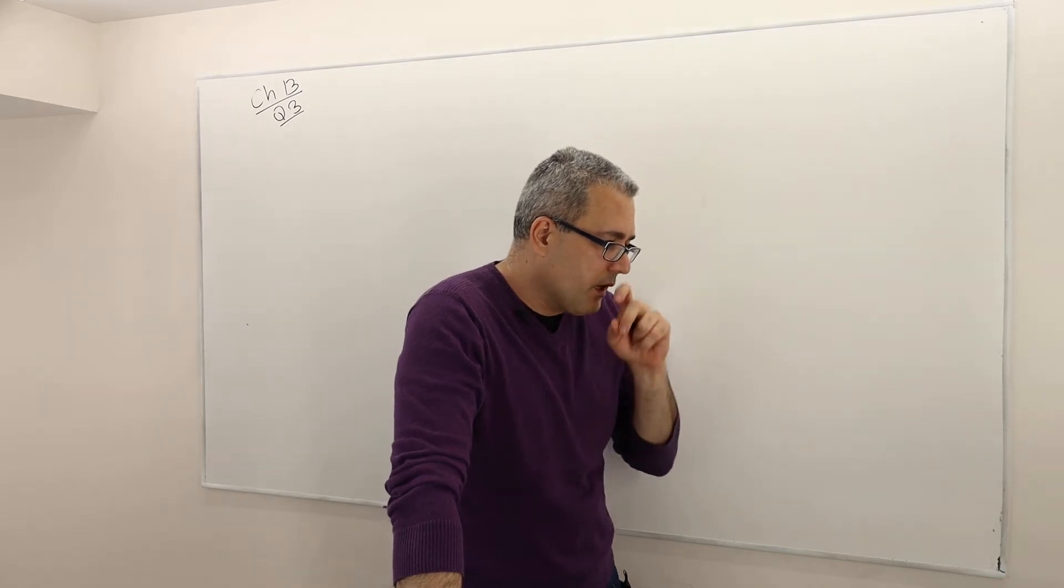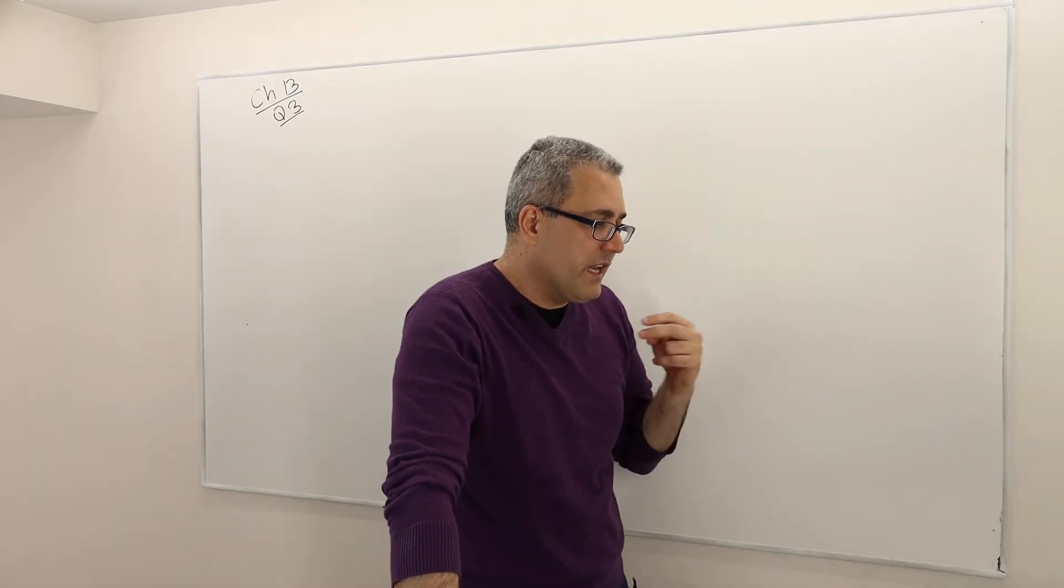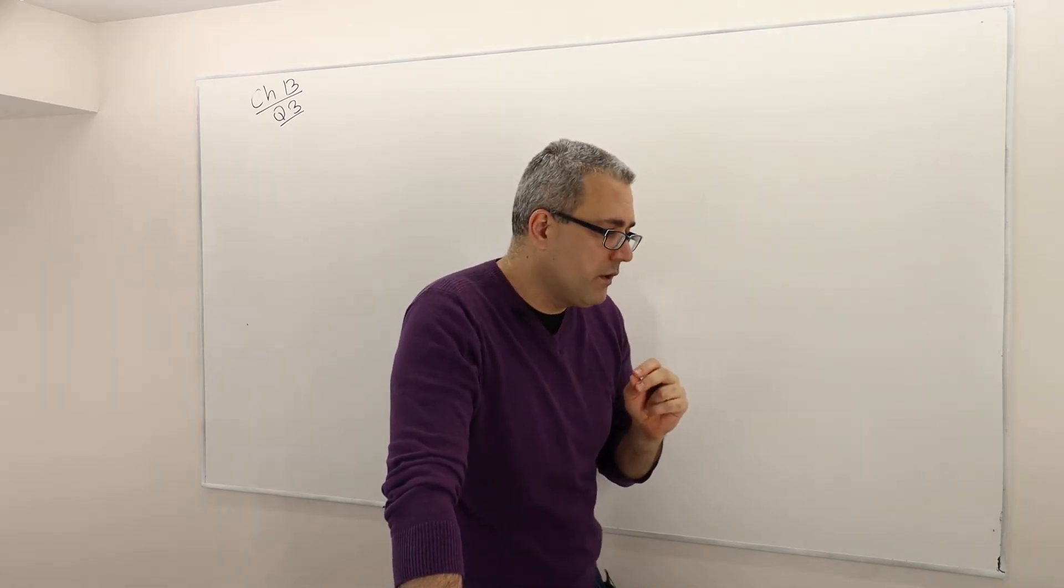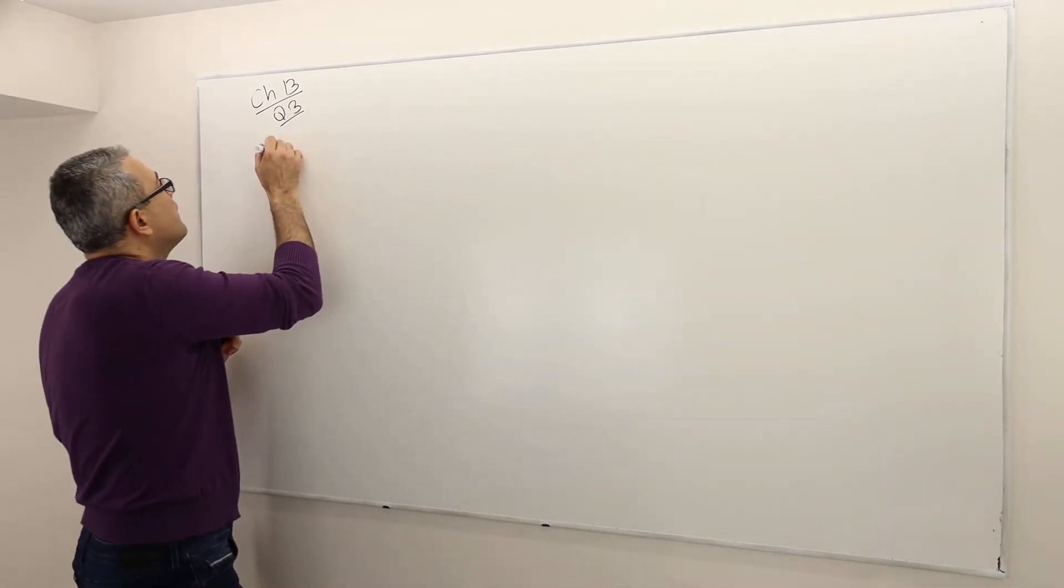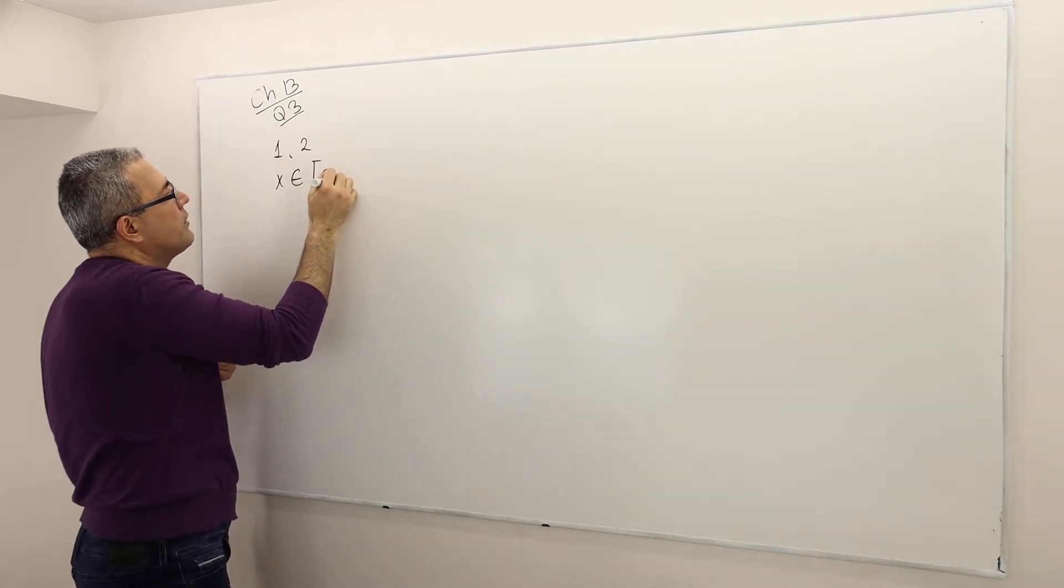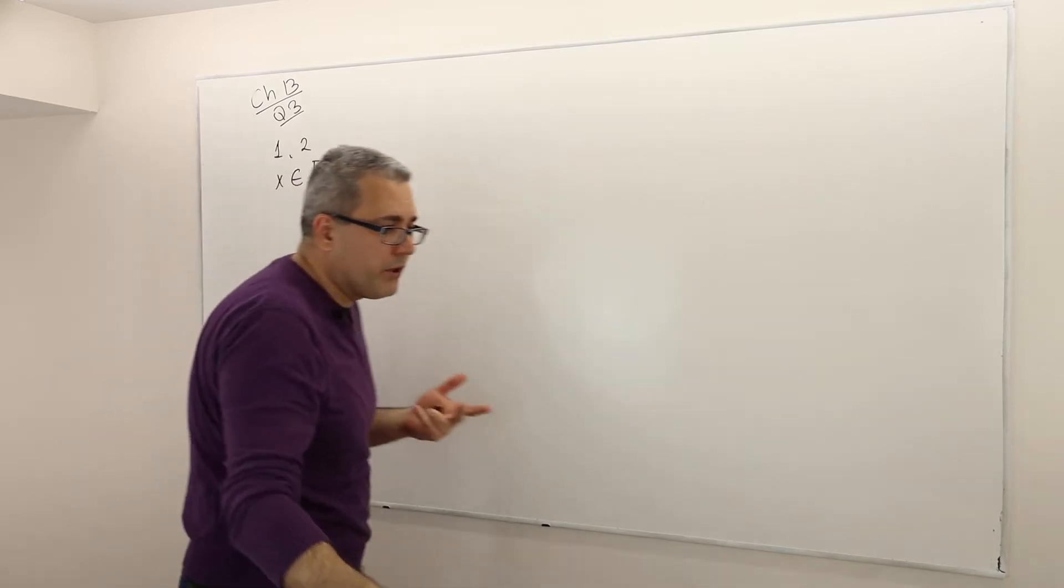There are two players. First, player 1 selects a number x which must be greater than or equal to 0. So player 1 and player 2. Player 1 chooses x, which is greater than or equal to 0, but there's no upper limit.